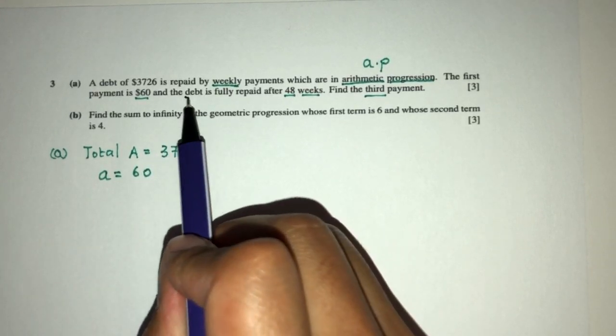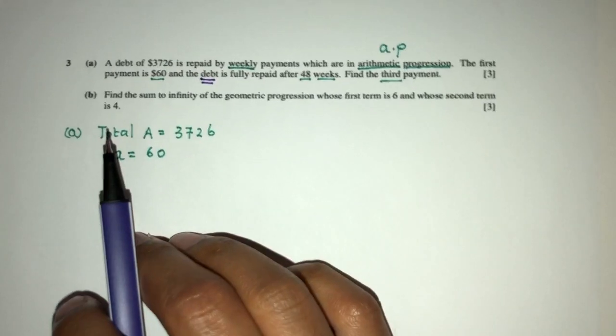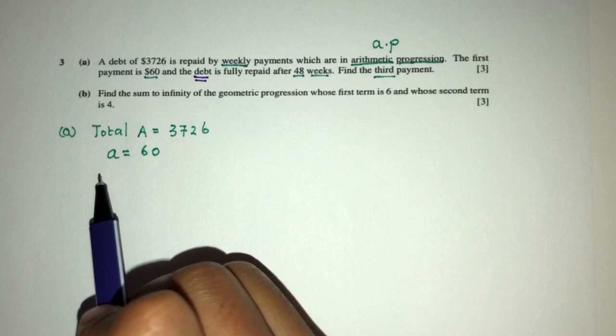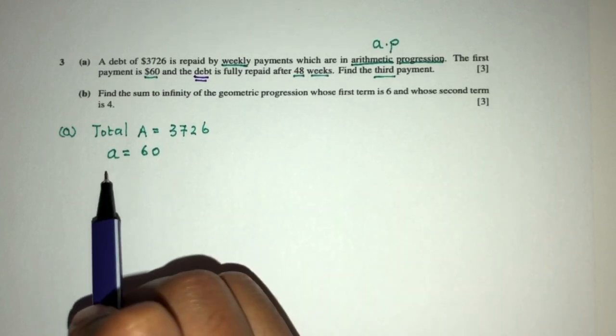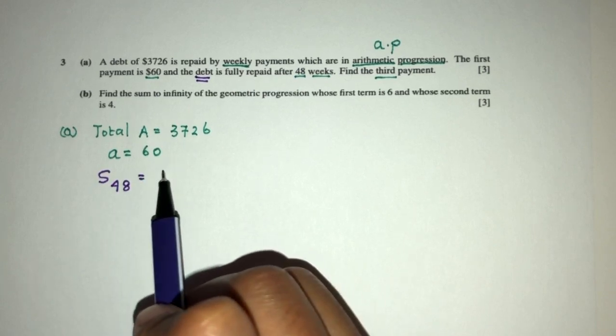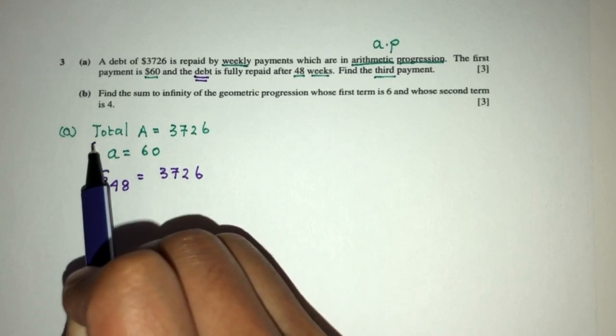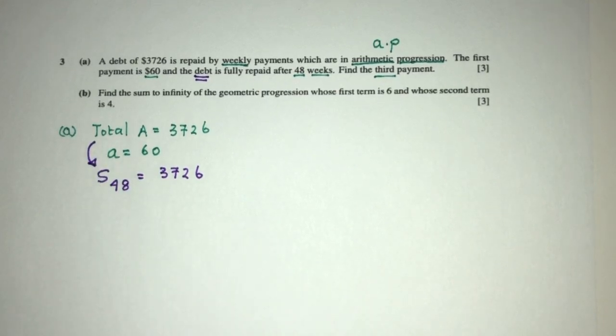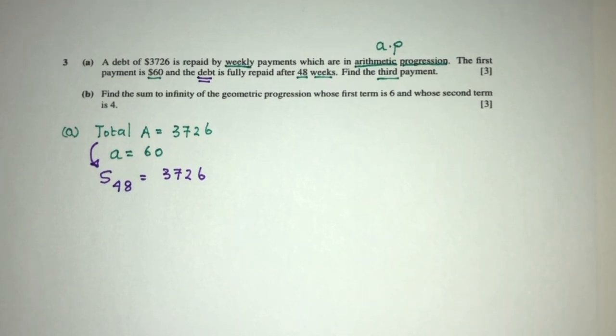And the debt is fully repaid after 48 weeks. So we repaid the whole thing after 48 weeks, which means the sum of the 48 payments have to give you $3,726. So we're going to have to derive this from the given information. Now, since we know this is an AP,